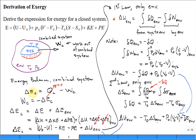The change in energy of the combined system is equal to any heat transfer during the process. For the combined system, there is no heat transfer in or out of the environment — from the environment to the surroundings or anything else — so that's zero, minus the work that we're interested in. So this useful work is equal to the negative of the change in energy of the combined system. We can express that as the energy change of the system plus the energy change of the environment.